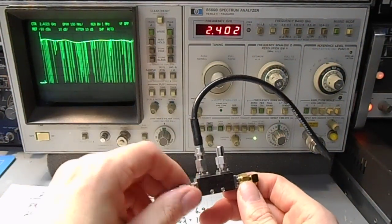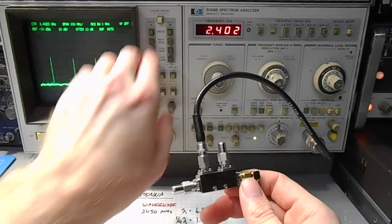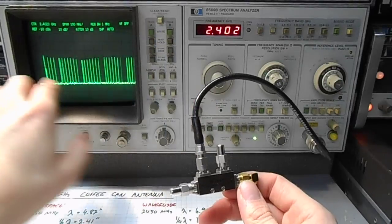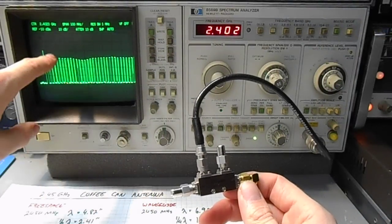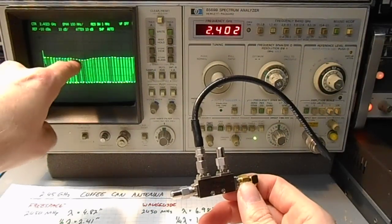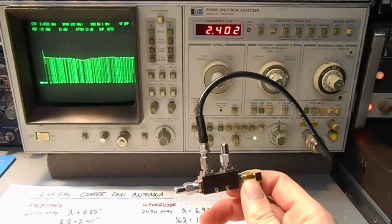Naturally, we want to have the minimum reflected power. When we hook up our antenna, we want to trim the monopole probe antenna so we get the minimum reflected power, which will be about negative 40 dBm.